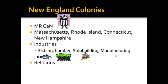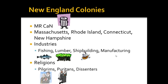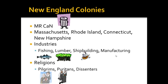The primary religions were the Pilgrims and the Puritans, who both came over to practice their religion as they chose, but there was a group called the Dissenters. The Dissenters didn't agree with either the Puritan or the Pilgrim religions, and so therefore were not really welcome in either colony.